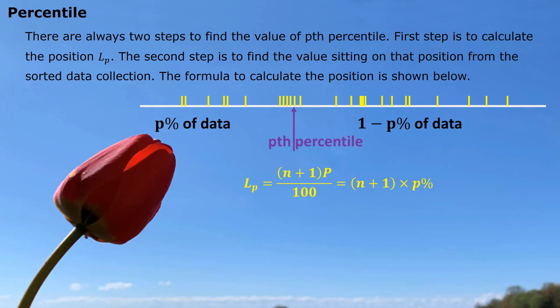LP represents the location of pth percentile. So, we use n plus 1 multiply p%. n is the sample size, which is how many data in this data collection, total number of data in the data collection.